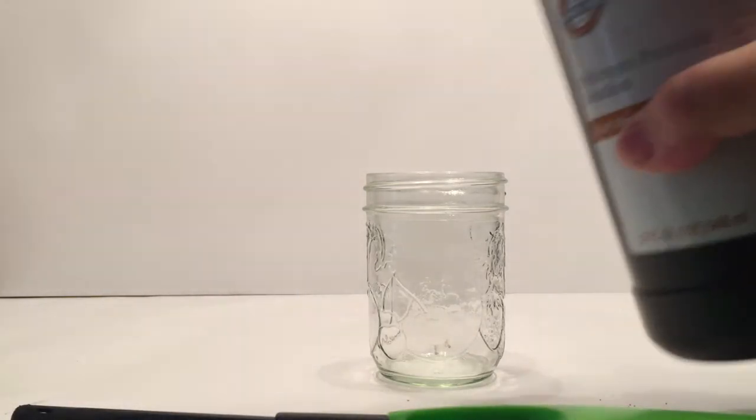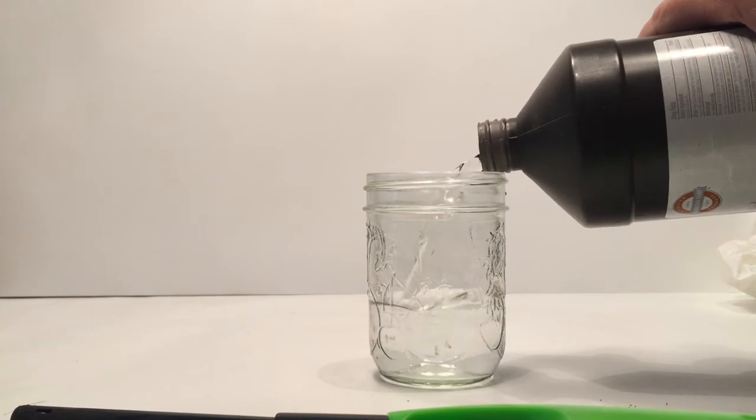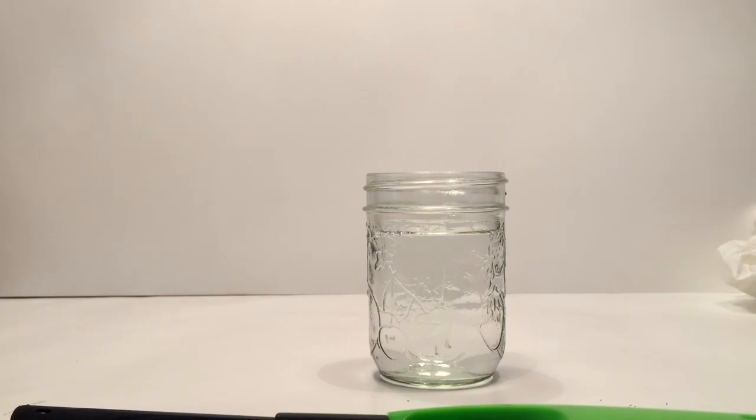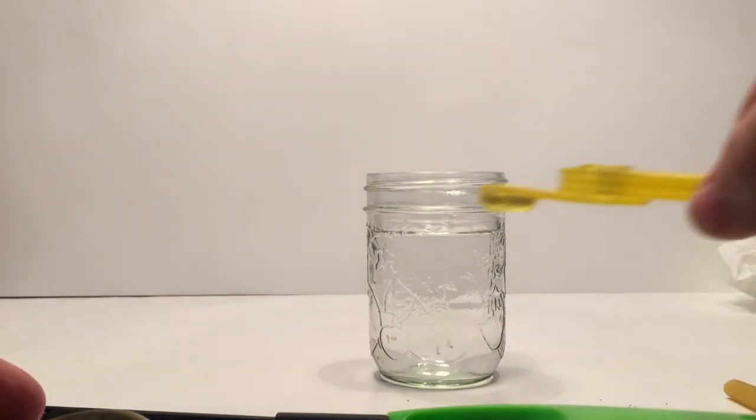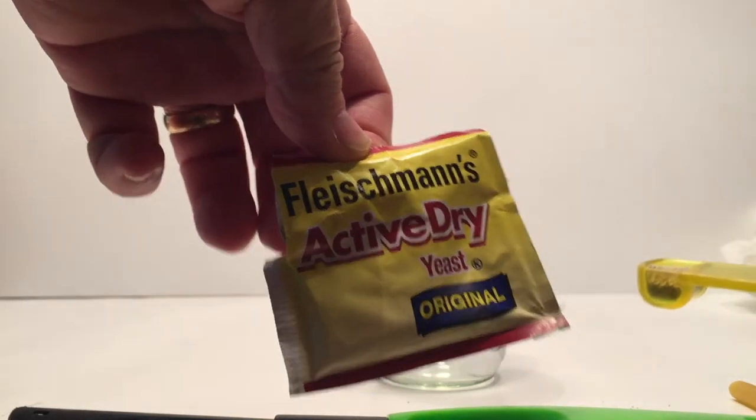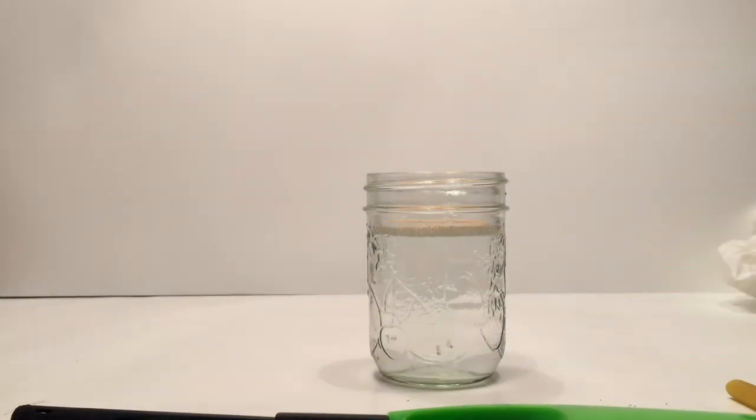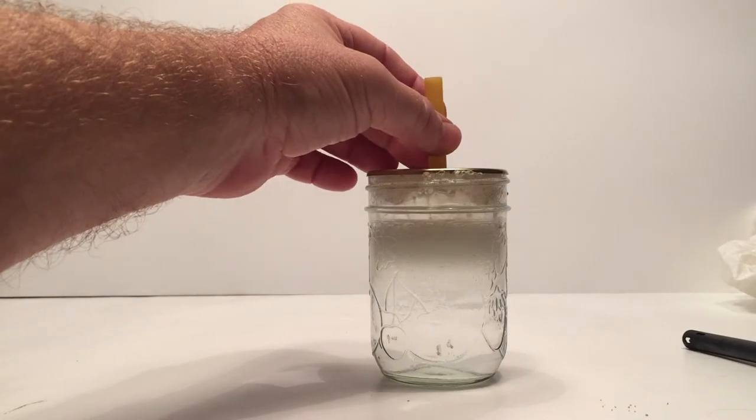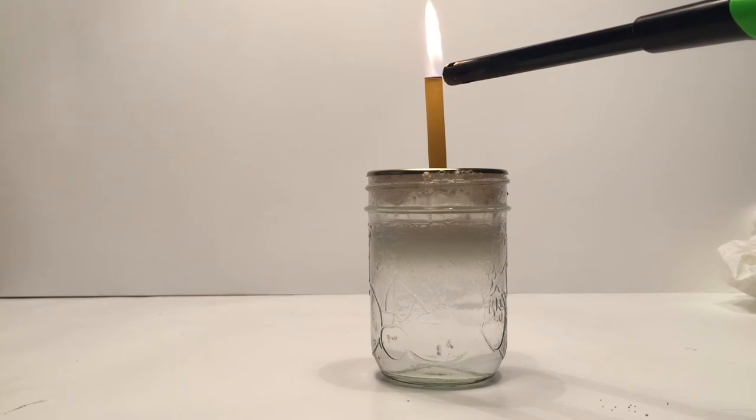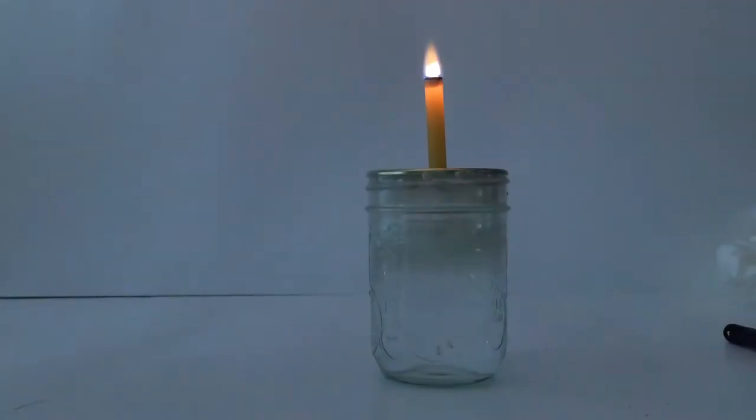To set up the experiment we're going to pour about two-thirds of the mason jar full of the hydrogen peroxide. Then you're going to take a quarter teaspoon of the yeast and put that into the jar and mix that up. Once you get that all mixed up you're going to put the top on right away and balance your pasta and then light the top of the pasta. Your hybrid pasta rocket engine is ready to go and it's firing off.